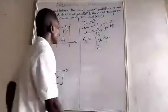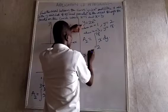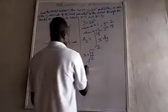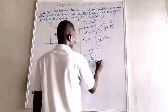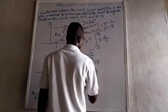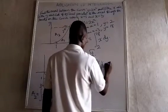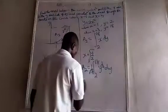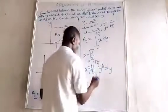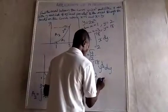When y equals 2x squared, x will be equal to the square root of y over 2. So x is equal to the square root of y over 2, which is y to the power of one half divided by the square root of 2. The integral for A2 will now be from 2 to 18 of x in terms of y, integrating y to the power of one half over root 2.